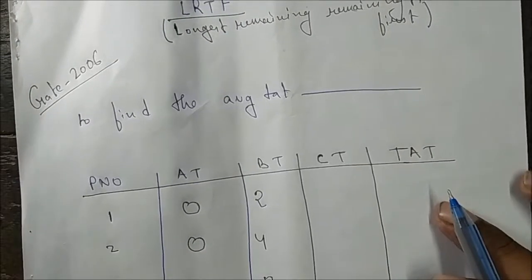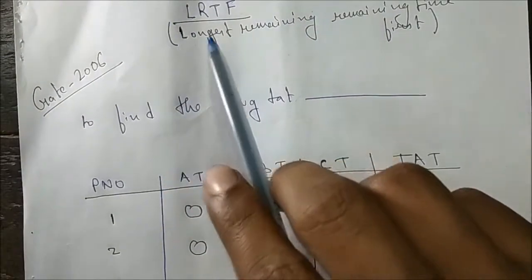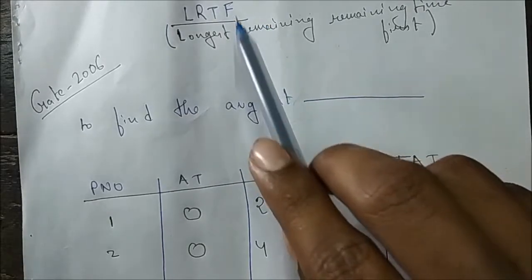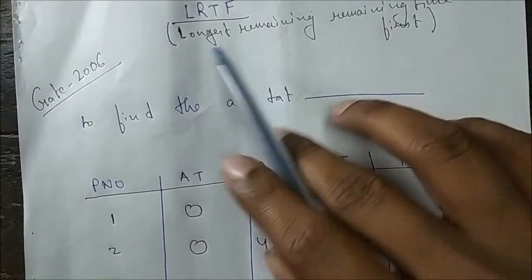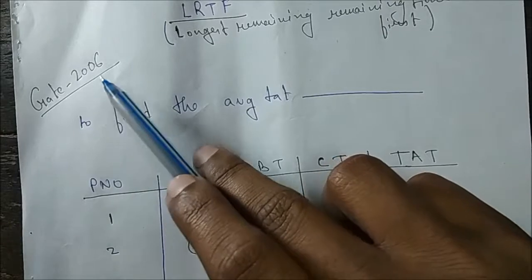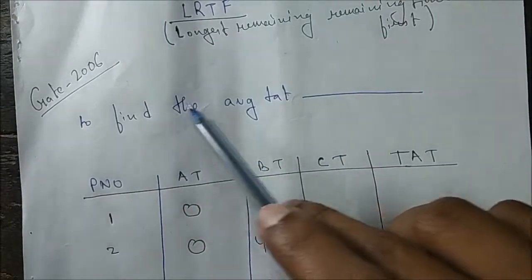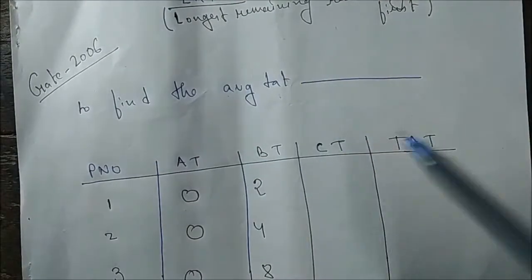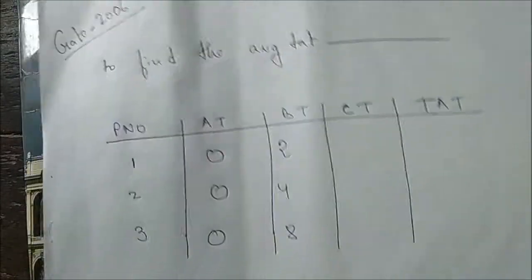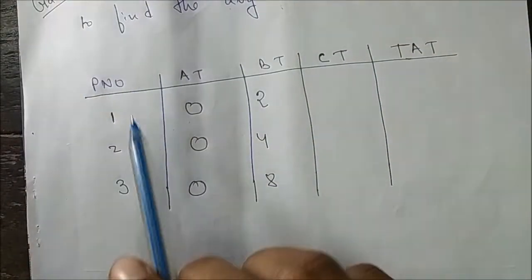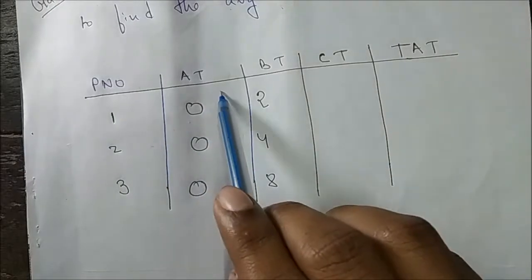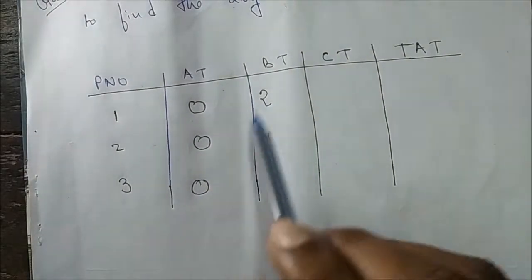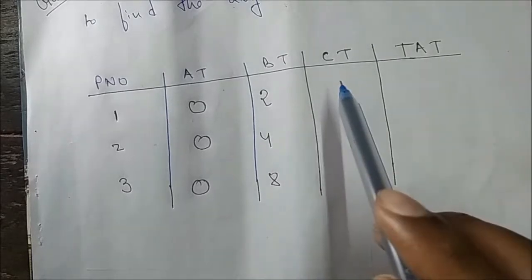This question is about the Longest Remaining Time First (LRTF) CPU scheduling algorithm. This is a GATE 2006 question asking us to find the average turnaround time. Three processes are given, all having arrival time zero, and their burst times are provided.